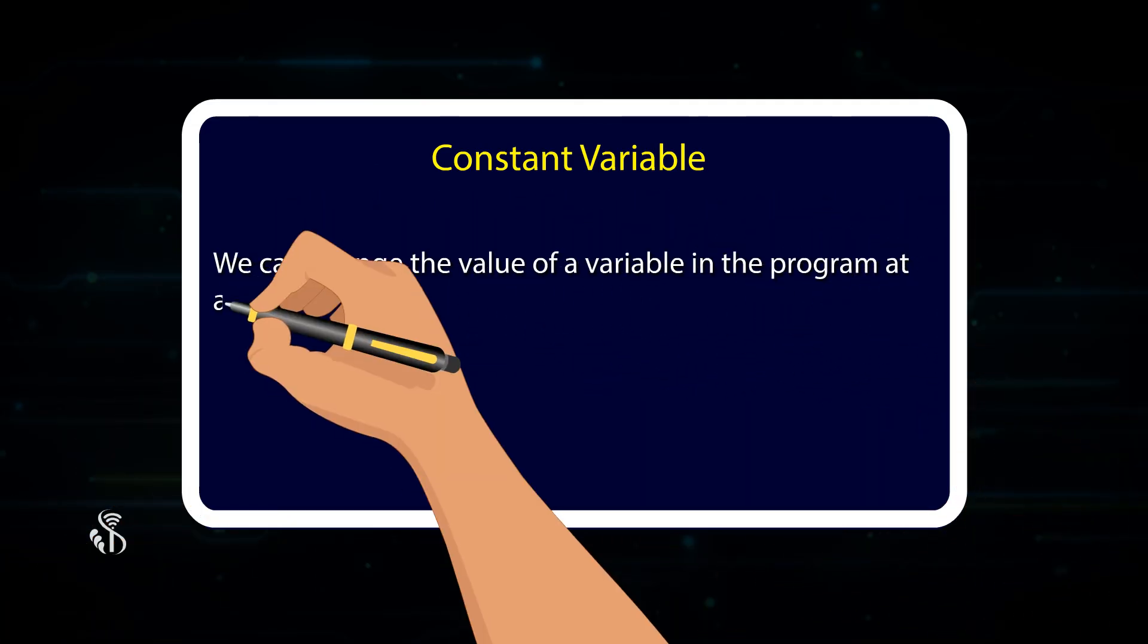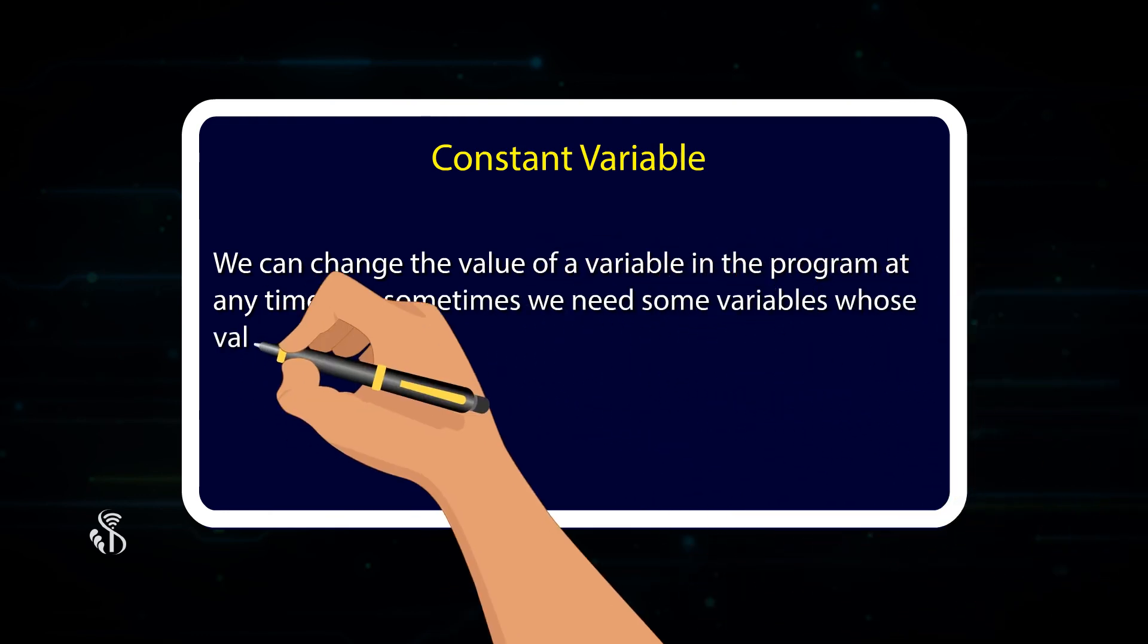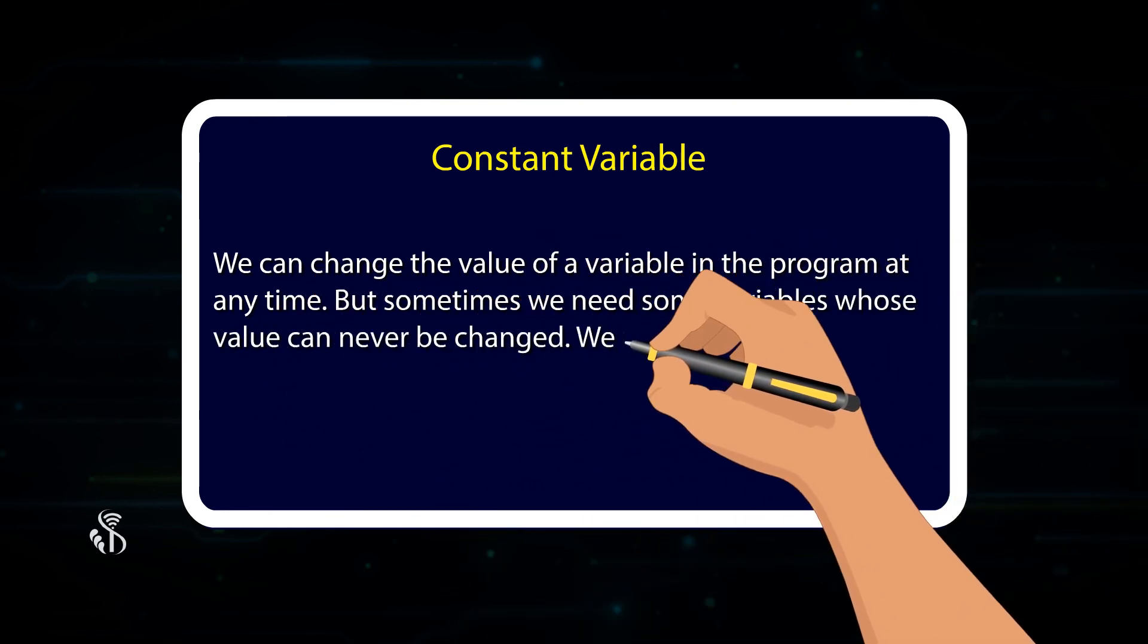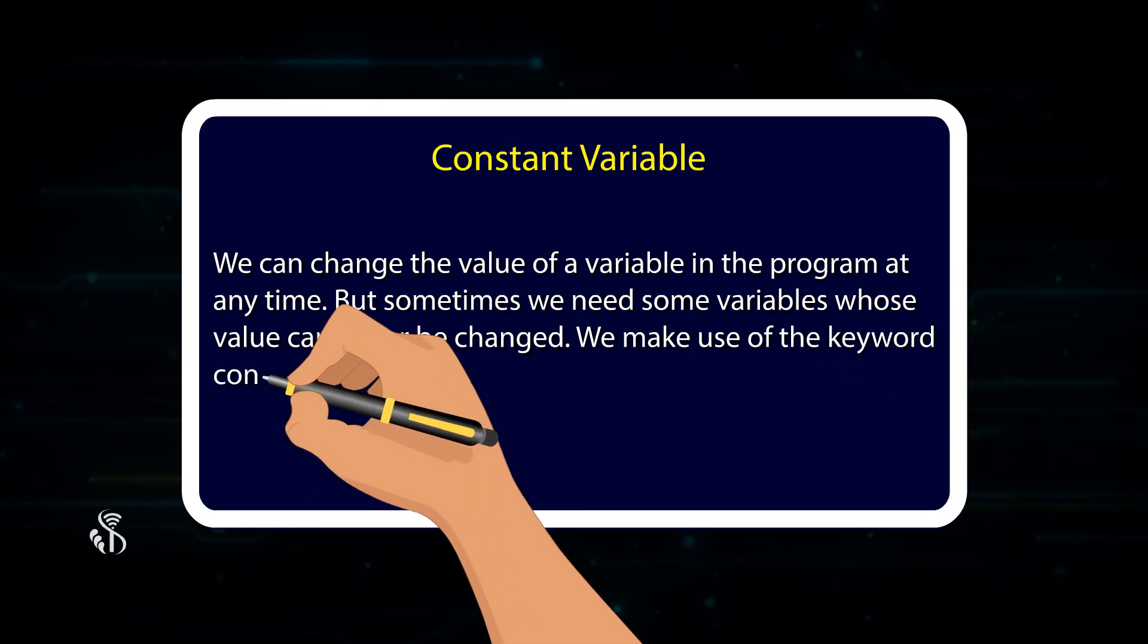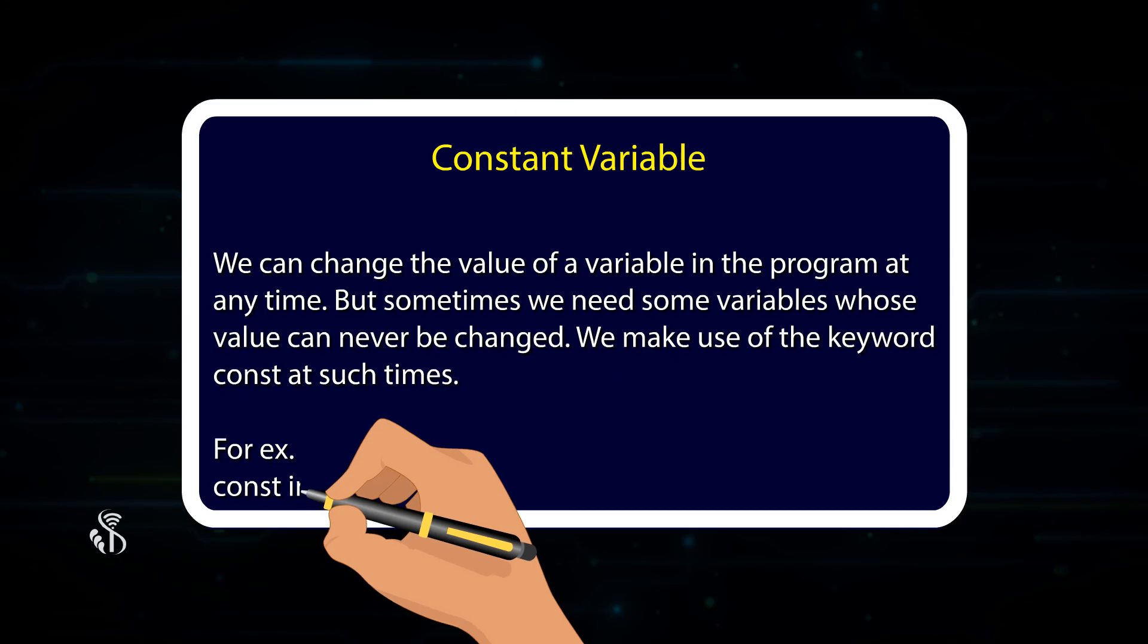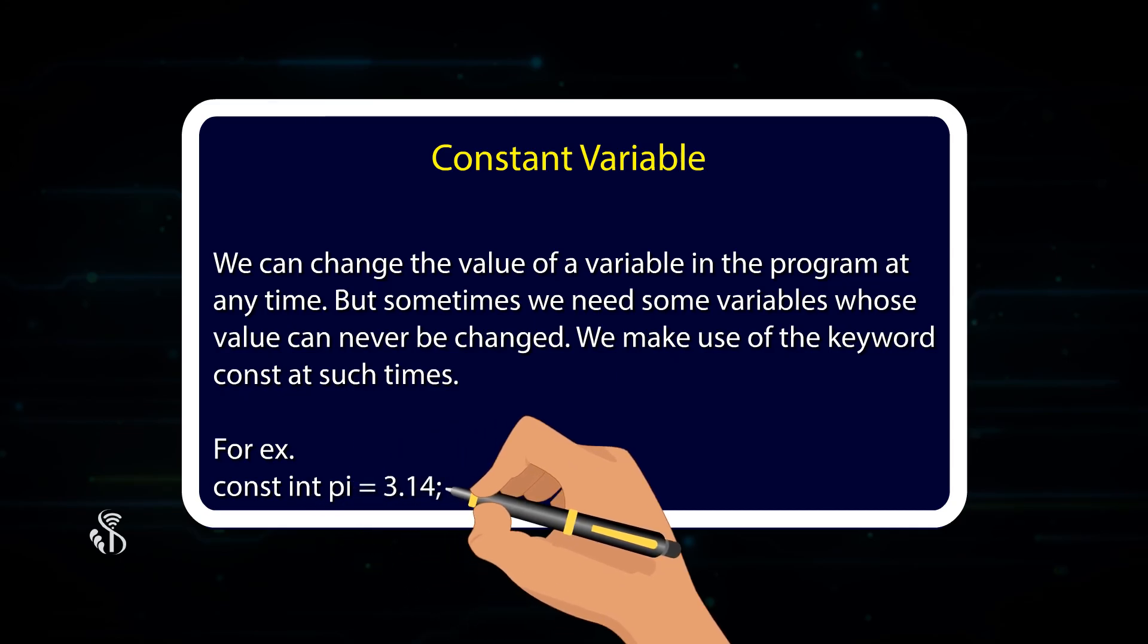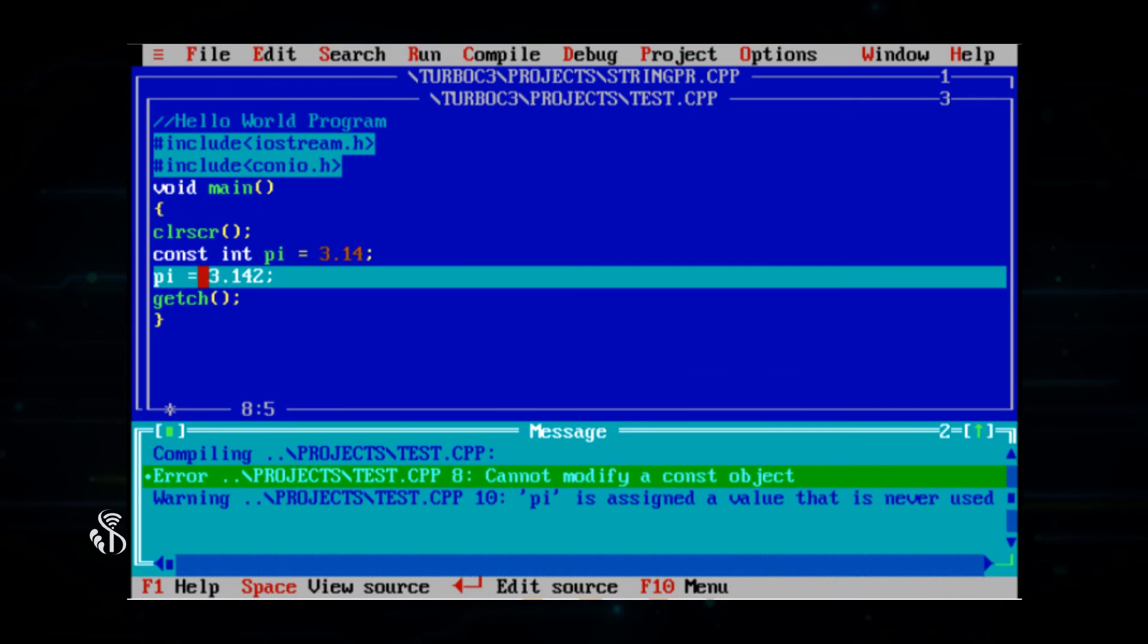We can change the value of a variable in the program at any time, but sometimes we need some variables whose value can never be changed. We make use of the keyword constant at such times. For example, constant integer pi is equal to 3.14, semicolon. If you try to change the value of a constant variable in your program, then the program will not compile and an error will be displayed.